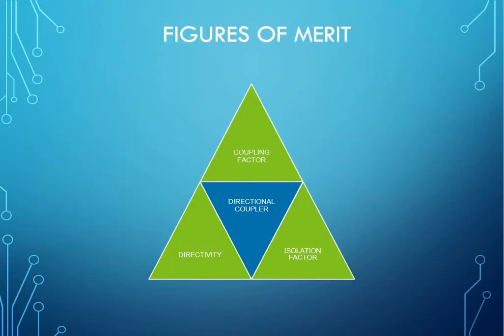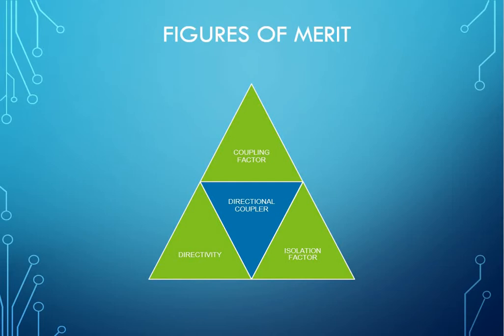Figures of Merit: Directional couplers always depend on three different measures. One is coupling factor, directivity, and isolation factors. These three factors will define the performance of a particular directional coupler. First, coupling factor.